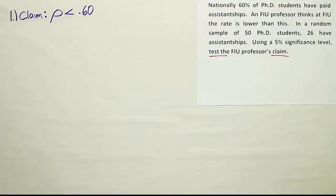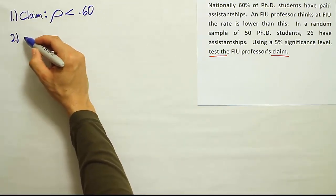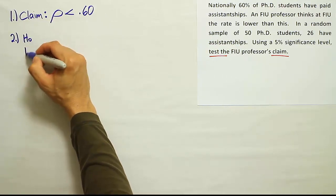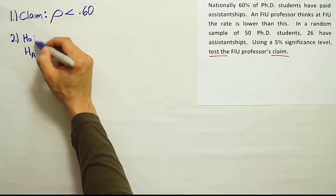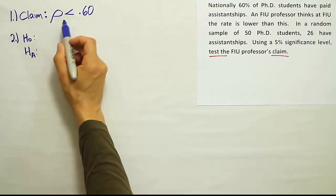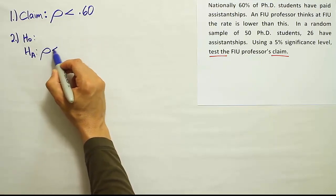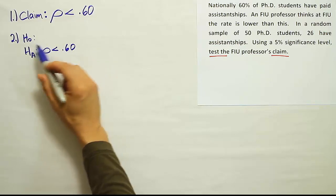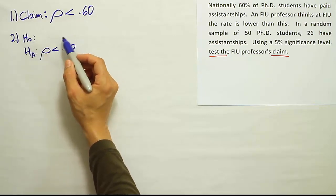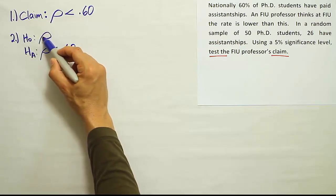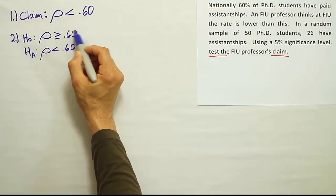Okay, so the proportion is less than 0.60 is the professor's claim. So once we have that, let's identify H0 and HA. That's our step two. Get the competing pair of hypotheses, H0 and HA. The claim here has a less than symbol that makes it HA. So I'm going to say rho is less than 0.60. And H0 is obviously the complement of that, or the opposite of that. So we're going to say greater than or equal to 0.60.